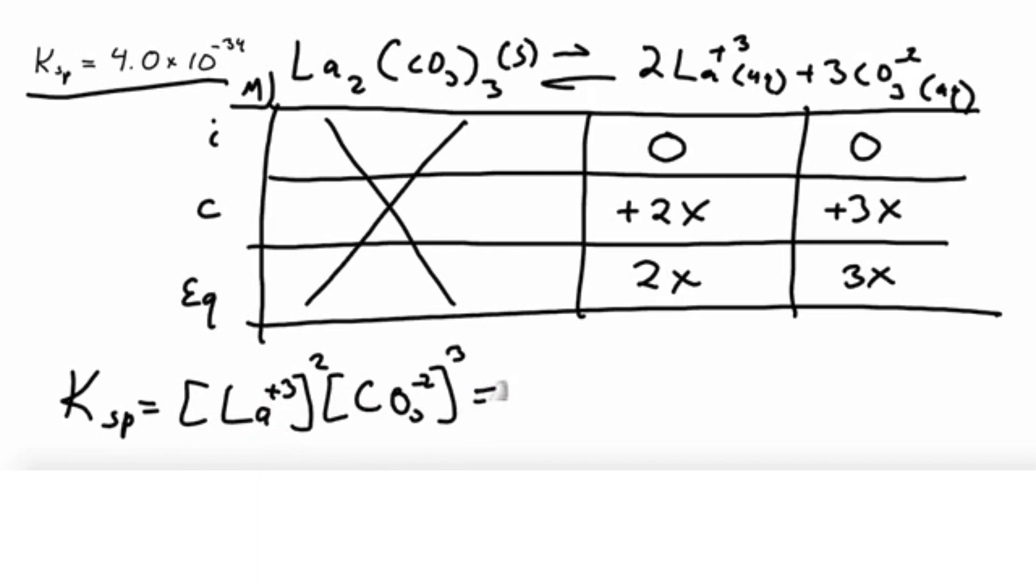So then we plug in these variables that we have on our ICE table into this expression. So we said the lanthanum concentration is 2x. That entire quantity squared, so you've got to have the 2 and the x in there before you square it. And for the carbonate, it's 3x cubed. And this is where students often make mistakes. They take the square of the x and the cube of the x, but they don't do it to the numbers. You have to do it to both. So we get 4x squared times 27x cubed is equal to 108x to the 5th.